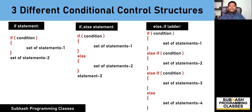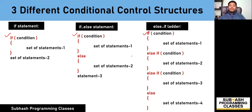There are three different conditional control structures supported in C language, and they are: if, if-else, and else-if ladder. These are the three different conditional control structures, and let us learn each of these one by one.